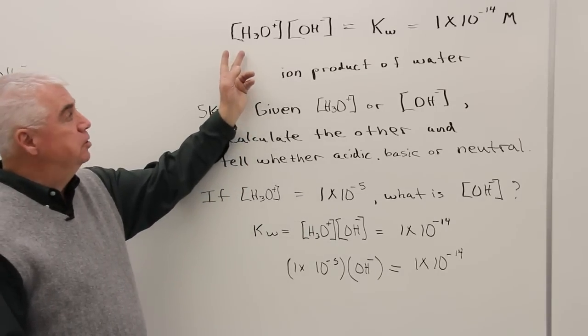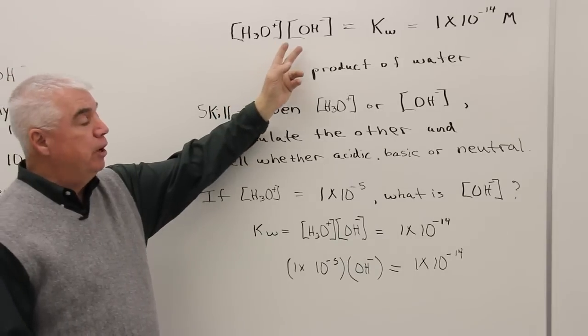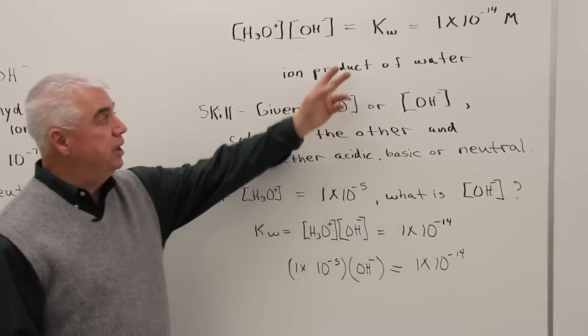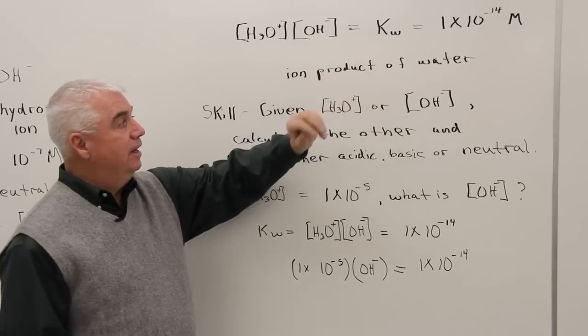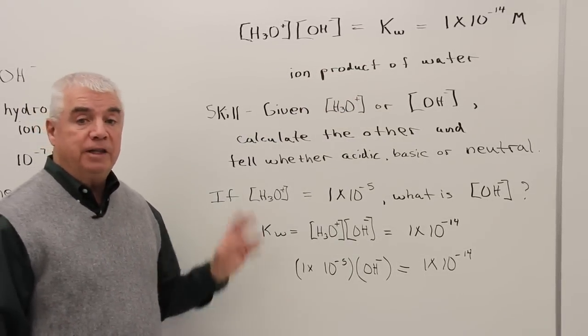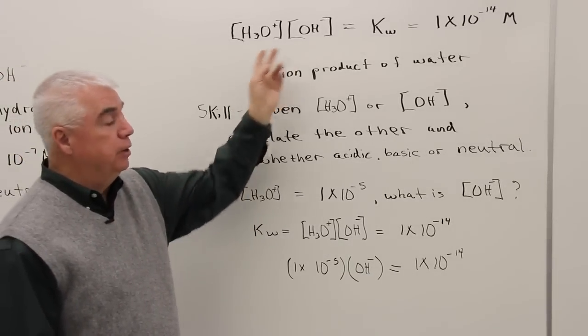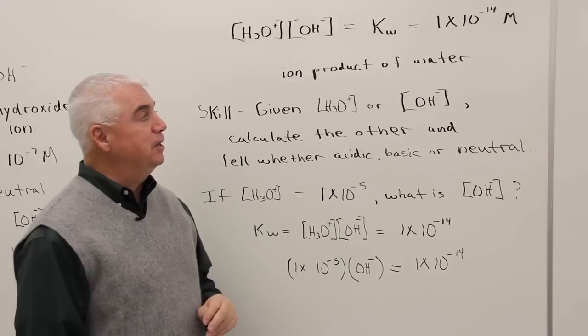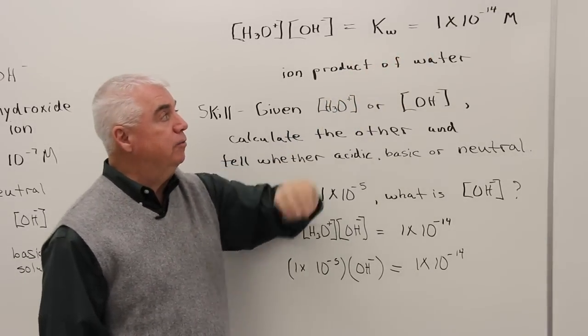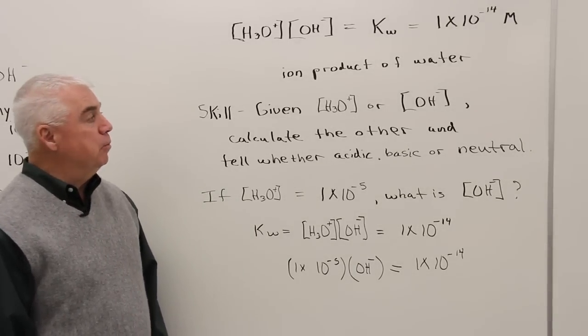Brackets indicate concentration, and we know that the concentration of H3O+ times the concentration of OH- is equal to a constant. It's called the ion product of water, and we can evaluate that constant because we know at neutrality the concentration of each of these is 10 to the minus 7th molar. So it must be true that the ion product of water is equal to 1 times 10 to the minus 14th molar.